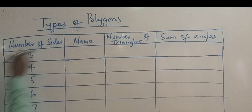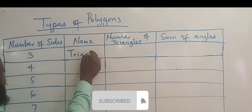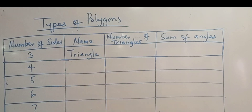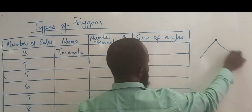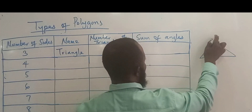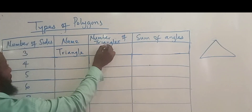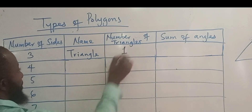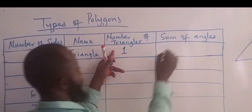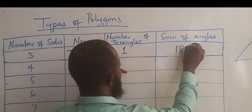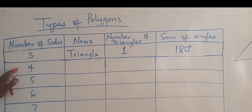The polygon with three sides is called a triangle. How many triangles can we find inside a triangle? We can only have one triangle. Therefore it has one triangle, and the sum of angles in a triangle, as we know, is 180 degrees.